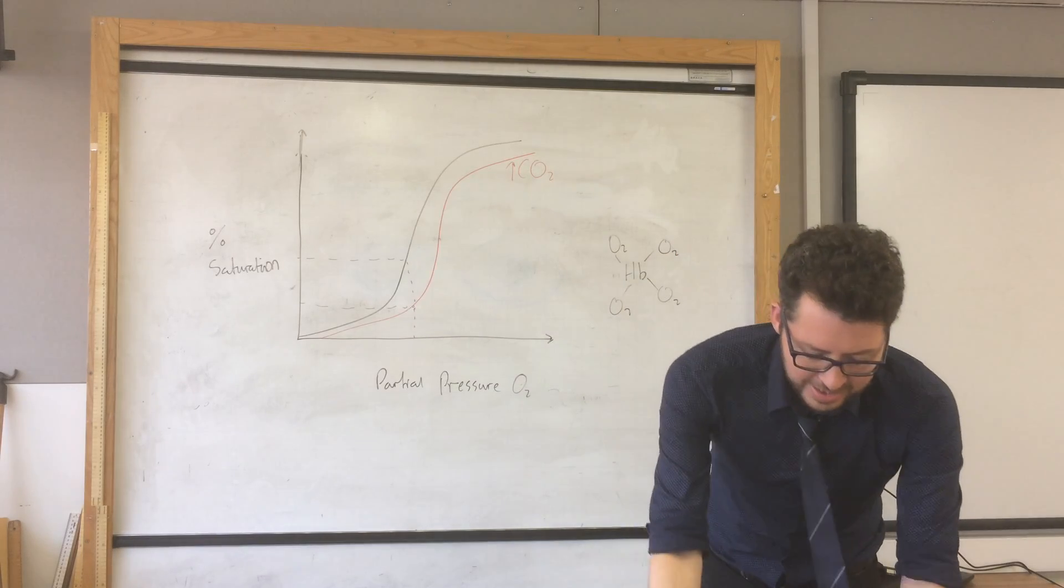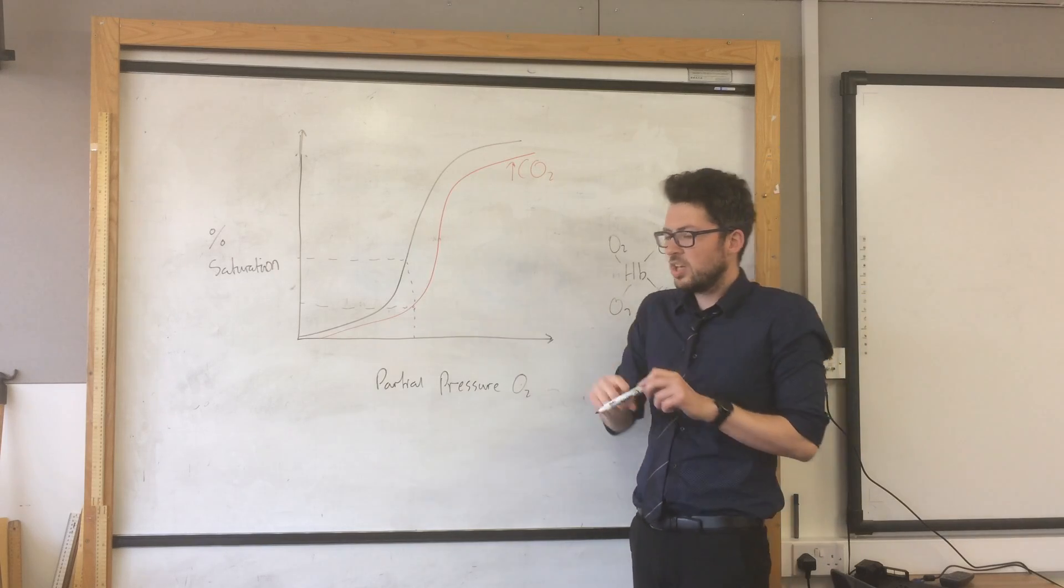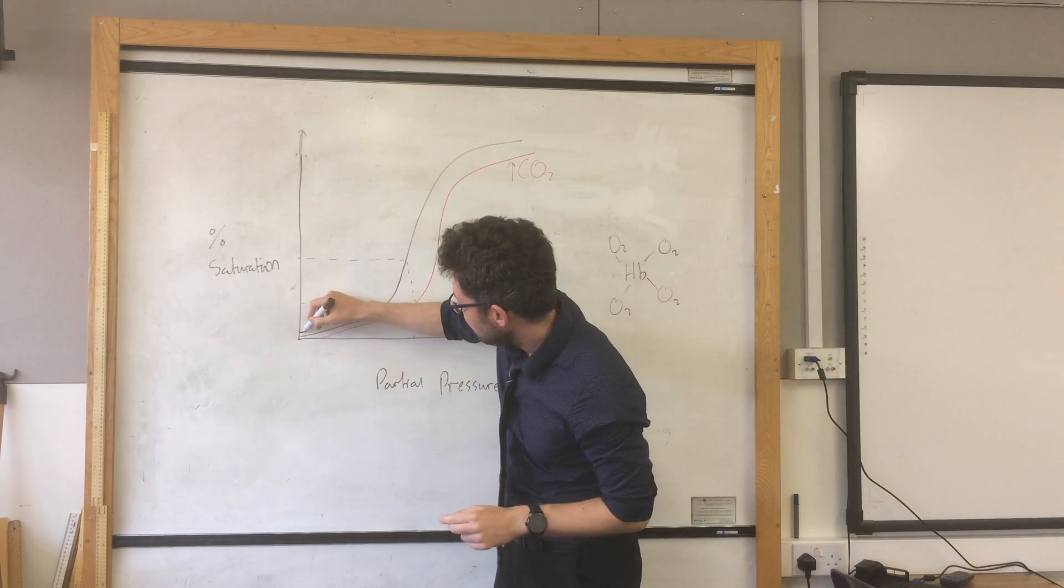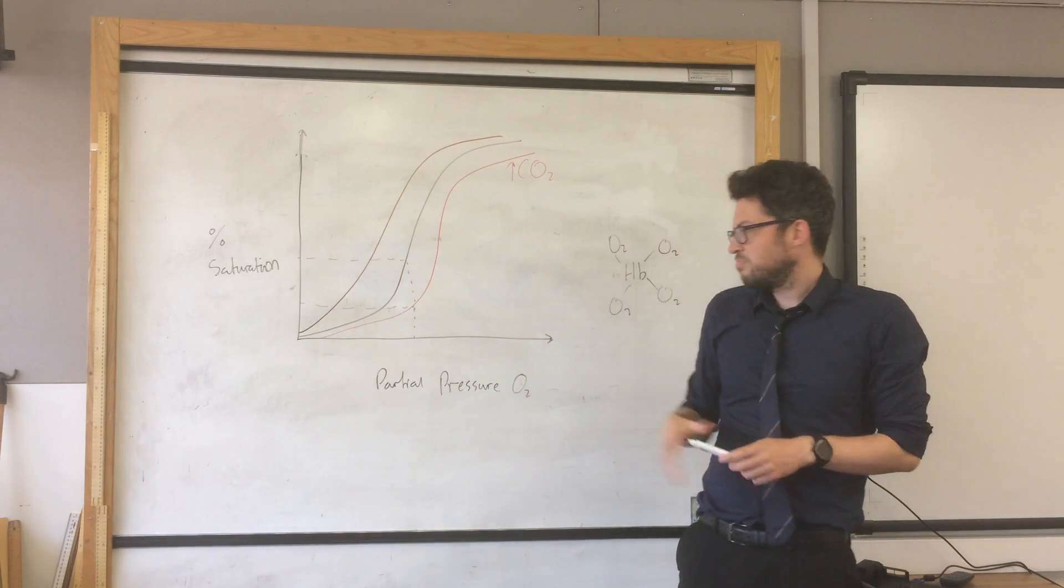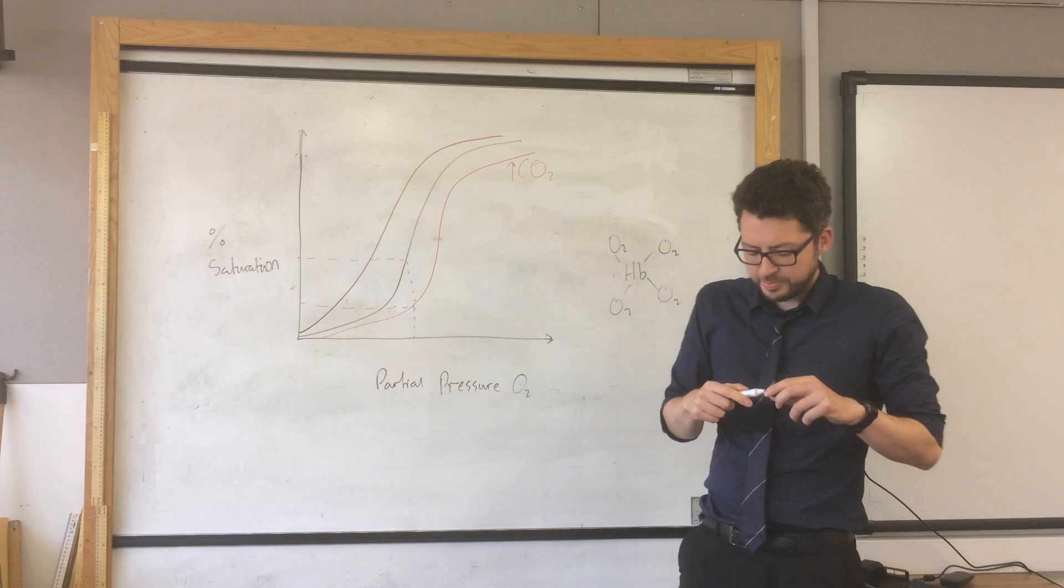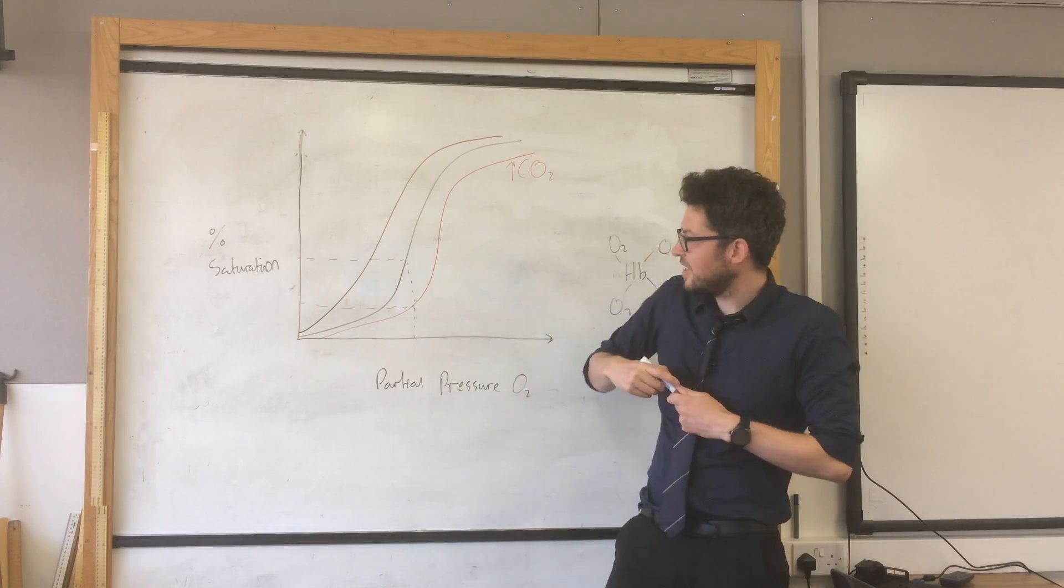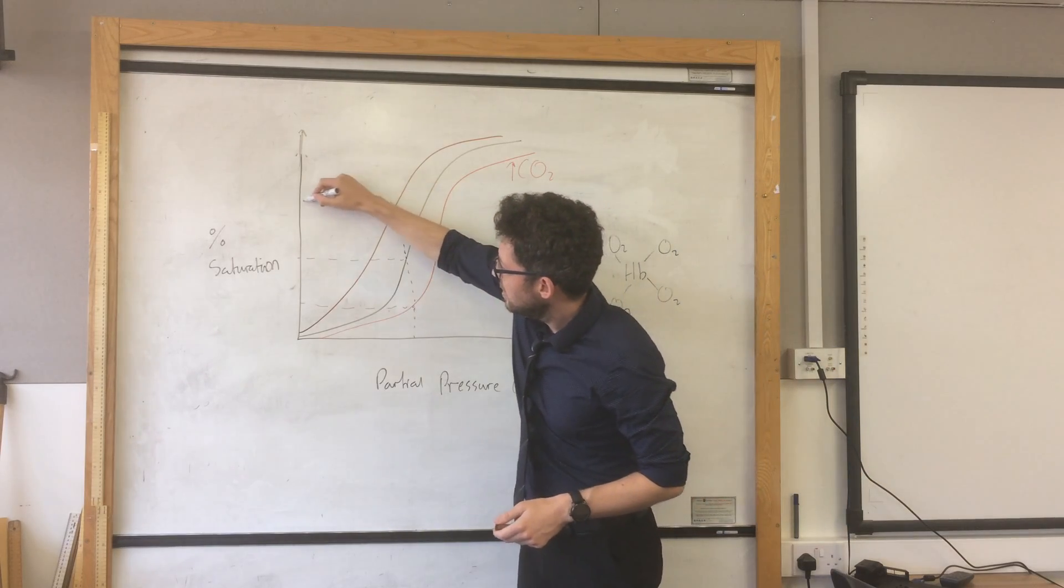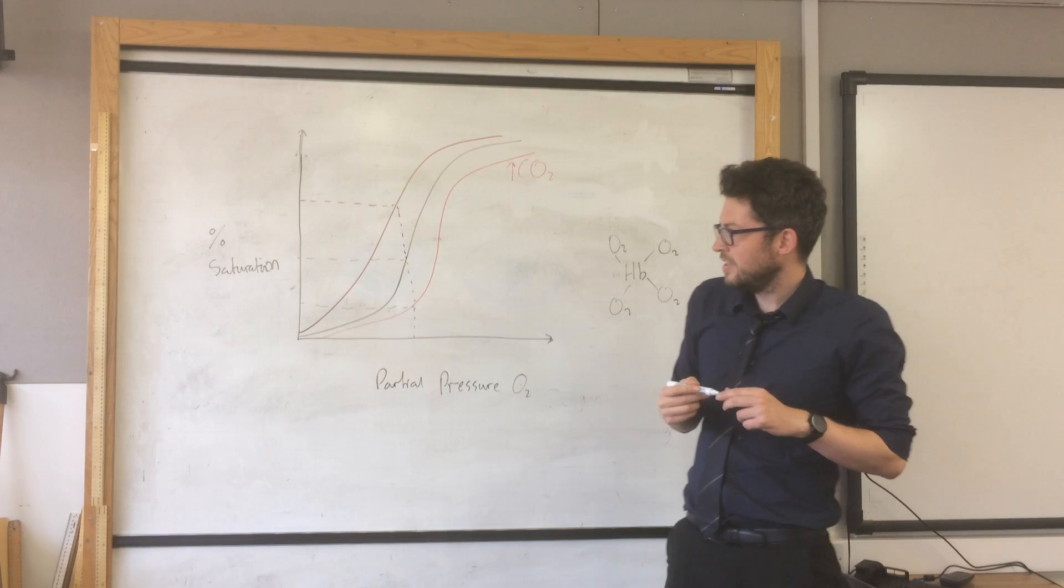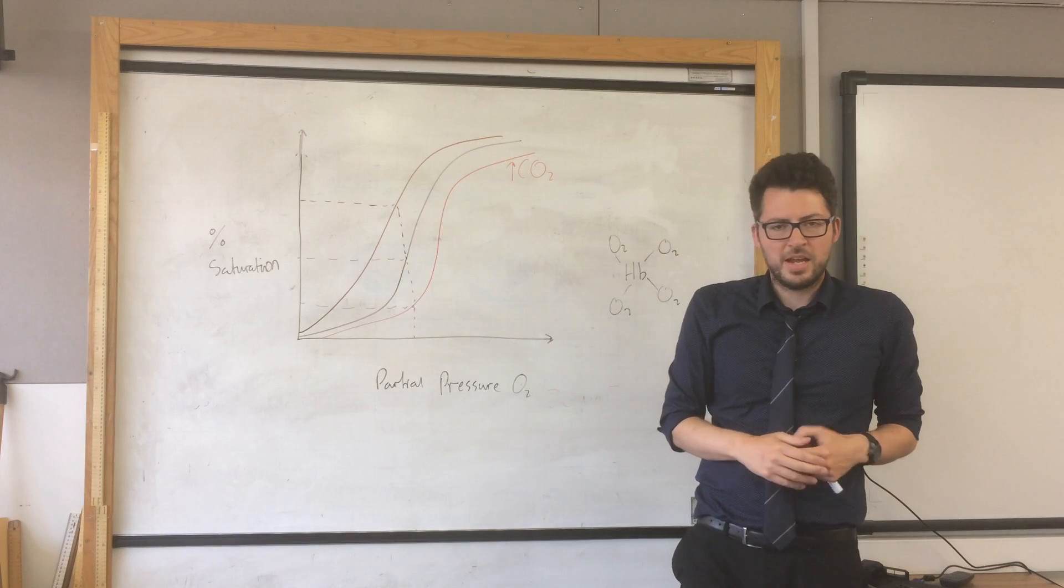Another thing that we can also link into this is fetal hemoglobin. So you can actually move this curve slightly to the left. My lines aren't perfectly drawn, but they're just illustrating the point. So fetal hemoglobin, what we can see is at that same partial pressure, fetal hemoglobin has higher affinity and is more saturated than normal hemoglobin which is the middle line.